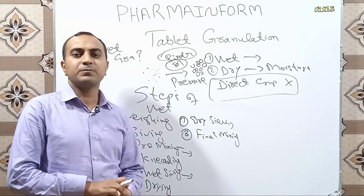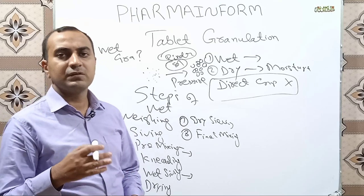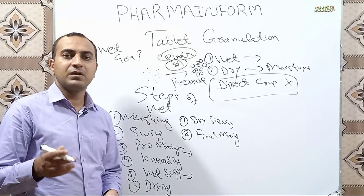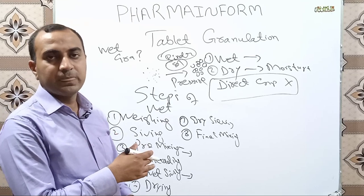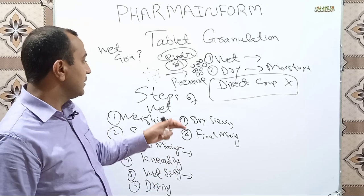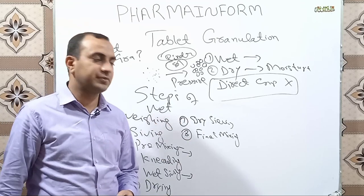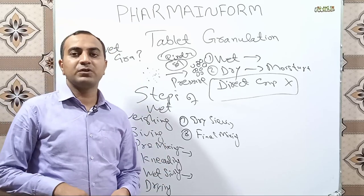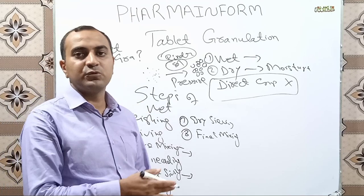After the final mixing step, our granulation process is completed and fine powders are fully converted into granules. In granulation, we also have fine powders — the ratio is usually 70% granules and 30% powders, or 80/20. The fine powders help in the compression process to fill void spaces.